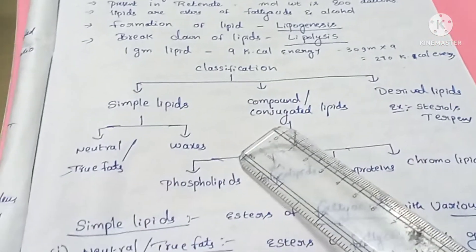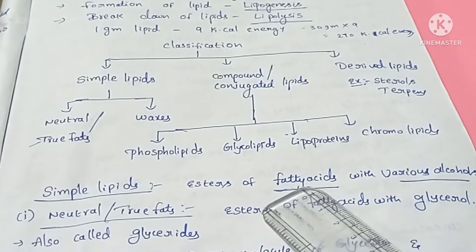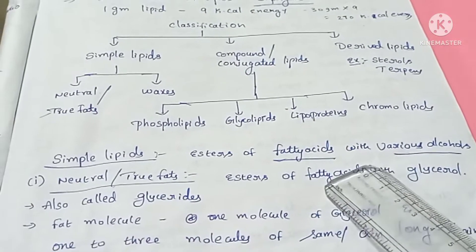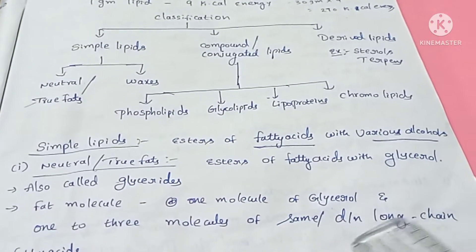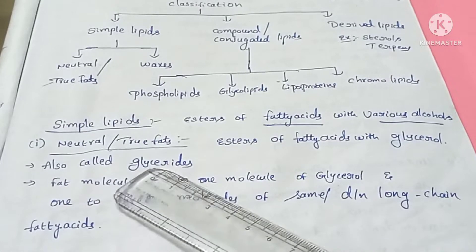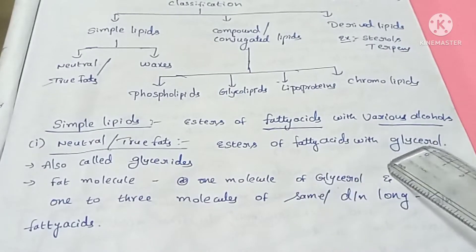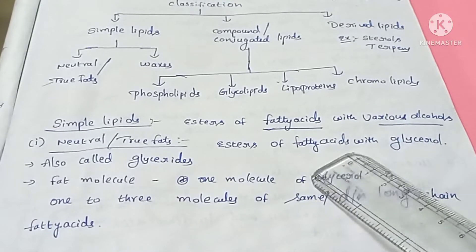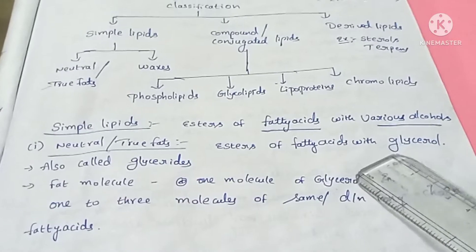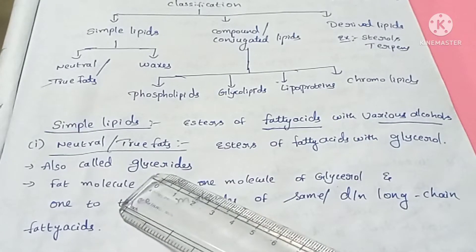First, simple lipids. Simple lipids are nothing but esters of fatty acids with various alcohols. So the first sub-class is neutral or true fats, and the second sub-class is waxes.